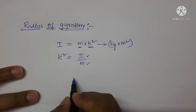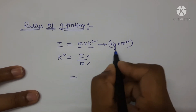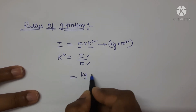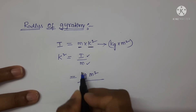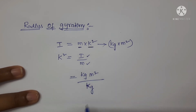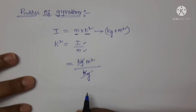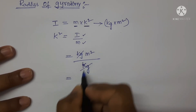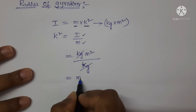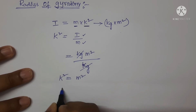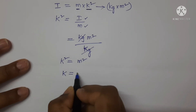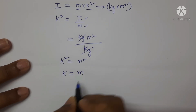Let us write this here. So, kilogram meter squared for moment of inertia, divided by kilogram for mass. Here, kilogram and kilogram will get cancelled. The remaining term is meter squared. On both sides, the square will get cancelled. So, radius of gyration is equal to meter.